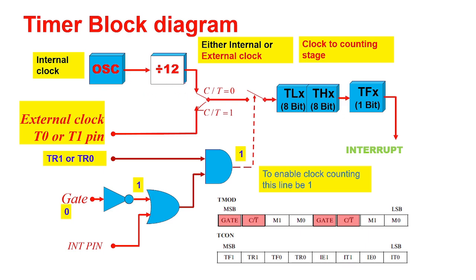By default, the switch will be in timer mode. If you want to make it a counter, C bar T should be 1. To enable the timer, values will be calculated and loaded into the timer register. To start counting, the TR bit must be enabled.